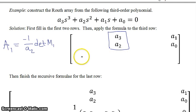So if I want to apply that formula, then my A1 element will be minus 1 over A2, remember A2 is this element here, times the determinant of that matrix, which will be A3 times A0 minus A1 times A2. This last element here in this column is a zero.